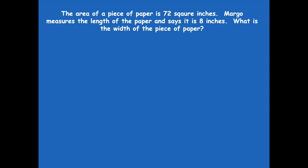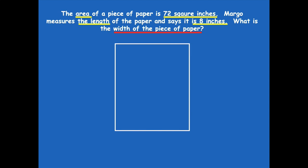Let's look at another problem. The area of a piece of paper is 72 square inches. Margo measures the length of the paper and says it is 8 inches. What is the width of the piece of paper? We know the area is 72 square inches and the length is 8 inches. We don't know the width — that's what we'll solve for. Here is my quick sketch of the area model. To find the value of w, we're going to divide.